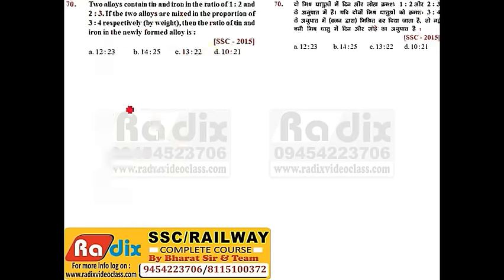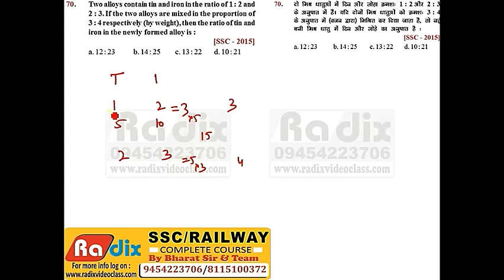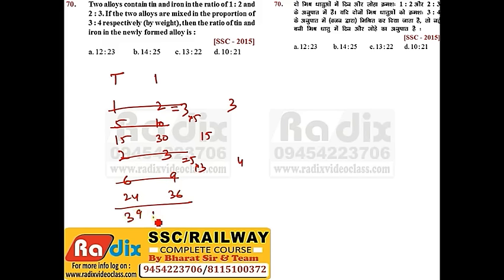Question 70. Two alloys contain Tin and Iron. In the first alloy, Tin:Iron = 1:2. In the second, Tin:Iron = 2:3. If the two alloys are mixed in the proportion 3:4 by weight, find the ratio of Tin to Iron. Sums are 3 and 5; LCM is 15. First alloy: Tin = 5 parts, Iron = 10 parts; multiply by 3 → 15 and 30. Second alloy: Tin = 6, Iron = 9; multiply by 4 → 24 and 36. Adding: Tin = 15 + 24 = 39... simplified to 3:22. Answer is option C.